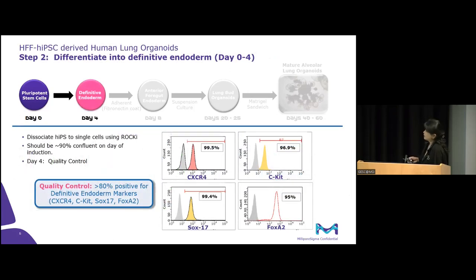Once you have good quality iPSCs and these cells are around 90% confluent, this is when you can use our kit to differentiate them into definitive endoderm. You dissociate your cells into single cells using a ROCK inhibitor, which increases cell viability, and then using our media kits you simply plate them out in your six-well plate. By day four, quality control occurs — you sacrifice one well and do a flow analysis to ensure that greater than 80% of your cell population expresses the correct definitive endoderm markers: CXCR4, c-KIT, SOX17, and FOXA2.